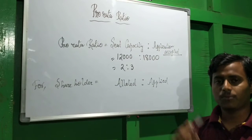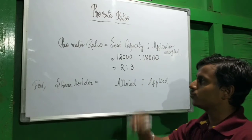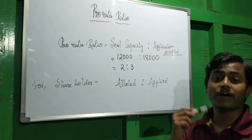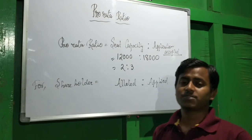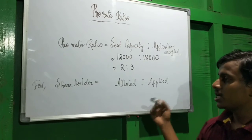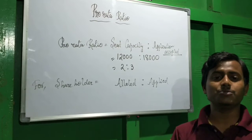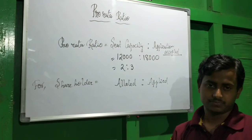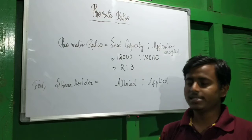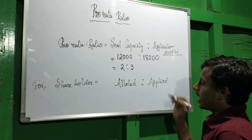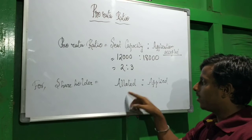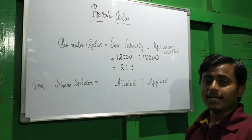So if someone applies for three shares, they will get two shares. That is the pro rata ratio. Pro rata allotment is very important in the chapter on Share Capital. For individual shareholders, we use the formula: allotted is to applied.